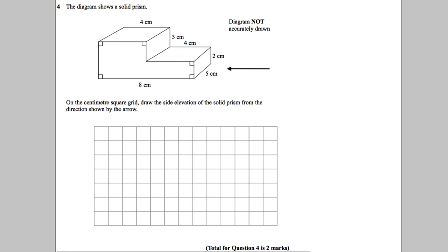This question talks about a solid prism. The dimensions are eight wide, five in depth, with heights of two here, four here, and three here on the centimeter grid.